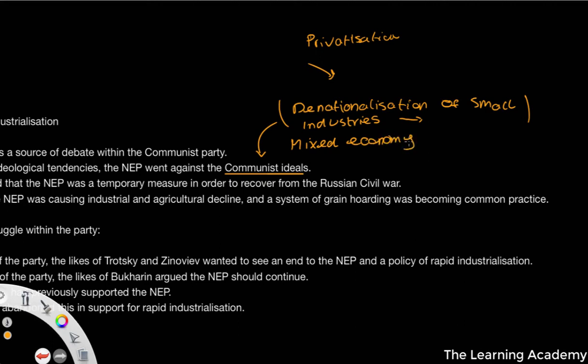In a mixed economy there are generally two ways of looking at the situation of the economy: privatization, where all industry and all the means of production are within the hands of the private sector, i.e., the market; and nationalization, where industries are put under the control of the government, in the public sector. For example, in the UK we have privatized industries like rail, and we also have nationalized industries like the NHS and healthcare. Therefore we have what we call a mixed economy, which is sort of a balance between the two.